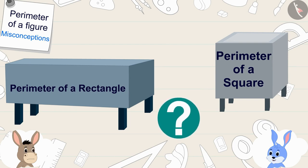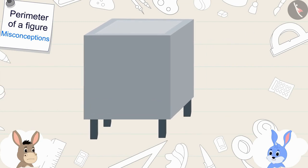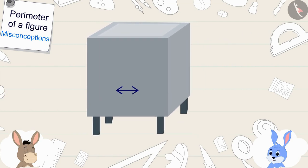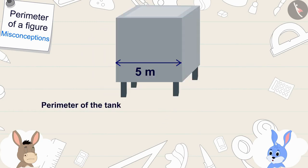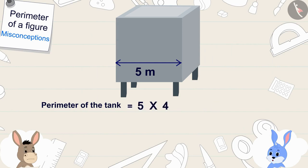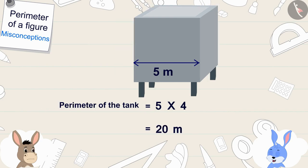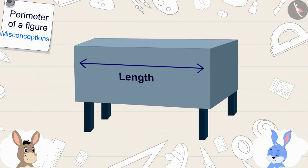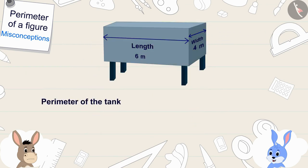'Let's find out then, Bholah. The size of the side of my square shaped tank is five meters, so the perimeter of the square shaped tank will be five multiplied by four, that is twenty meters. And the length of your rectangle shaped tank is six meters and the width is four meters.'